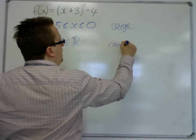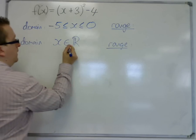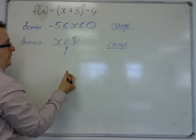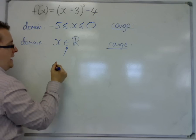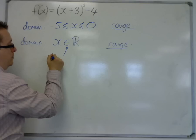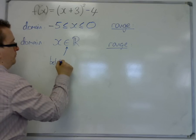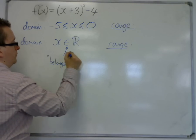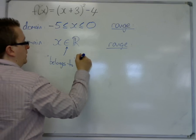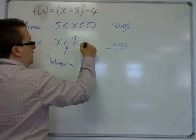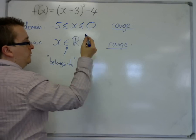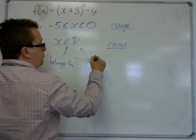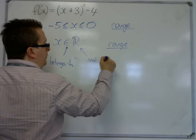Remember what this means. This symbol — this strange-looking 'e' — means 'belongs to.' And the capital R with a double line represents the real numbers.